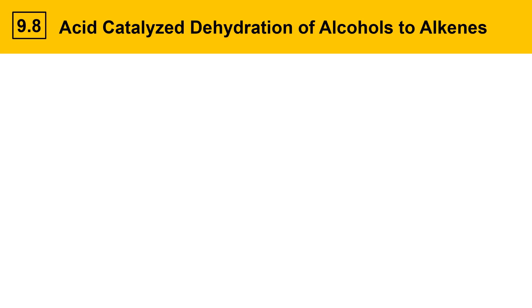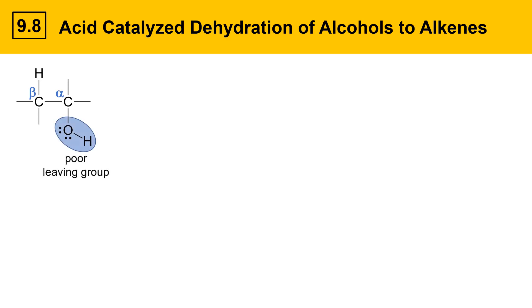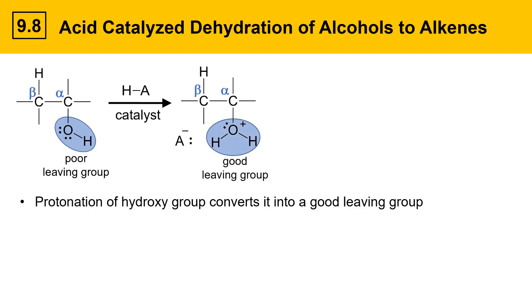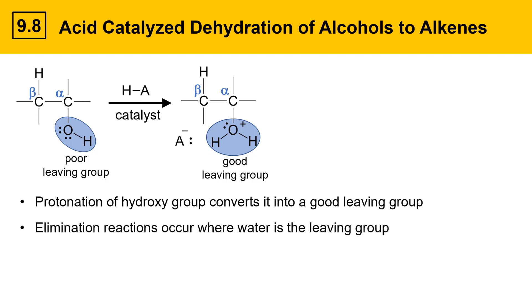We'll look at an overview of alcohol dehydration on this slide. Here's a generic alcohol. It has an alpha and beta position, as shown here. We can mark the alpha and beta positions just like we would at an alkyl halide undergoing elimination. The difference here is that the alcohol OH hydroxy group is a poor leaving group because it would leave as a strong base, so it won't leave on its own — it needs a little help. If we protonate that hydroxy group, it converts it into a good leaving group. This is the purpose of the acid catalyst. This leaving group is now good because it'll leave as water, which is a weak base.